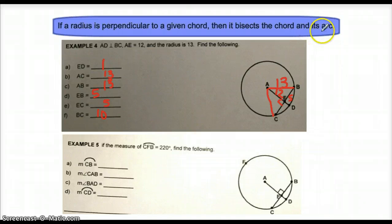Since the theorem says it also bisects its arc, here's an example that uses some arc measures. We know that the measure of major arc CFB is 220 degrees. That leaves 140 degrees left in the circle for the measure of arc BC. So we know that BC has to be 140. The measure of angle CAB, well, CAB would be this angle here. It happens to be a central angle. We learned last video that the measure of the central angle is exactly the same as the measure of its arc. So therefore, angle CAB must also be 140 degrees.